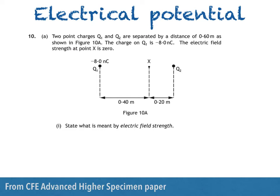Here's a question from the CFE Advanced Higher Specimen paper. Two point charges Q1 and Q2 are separated by a distance of 0.60 metres, as shown in figure 10A. The charge on Q1 is negative 8.0 nanocoulombs. The electric field strength at point X is 0. Part 1 asks us to state what's meant by electric field strength.